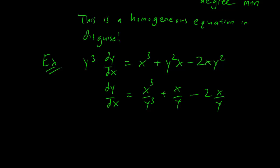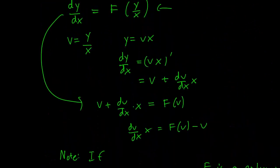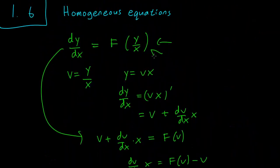All right, but this is just going to be equal to 1/(y/x)³ plus 1/(y/x) minus 2/(y/x). And this side is just going to be dy/dx of course, which gives us an equation of this form right here.